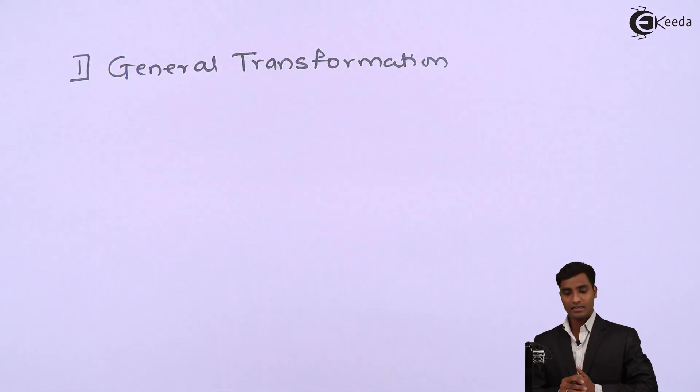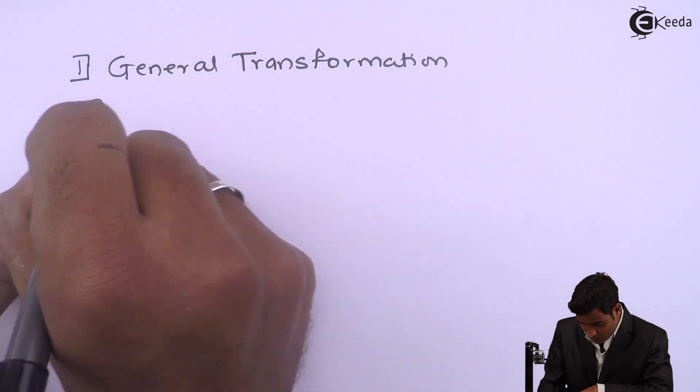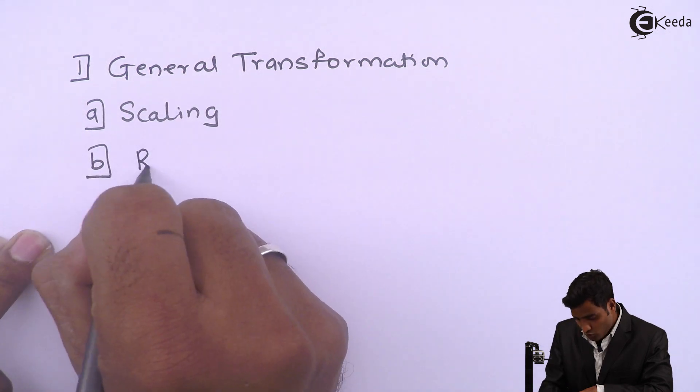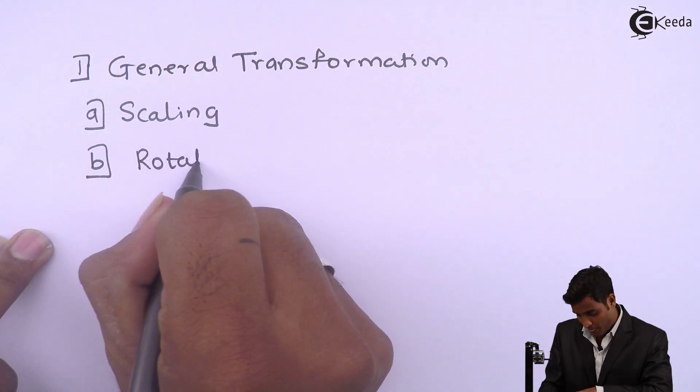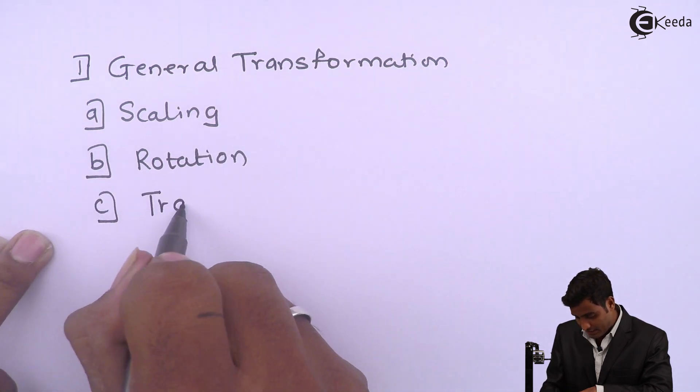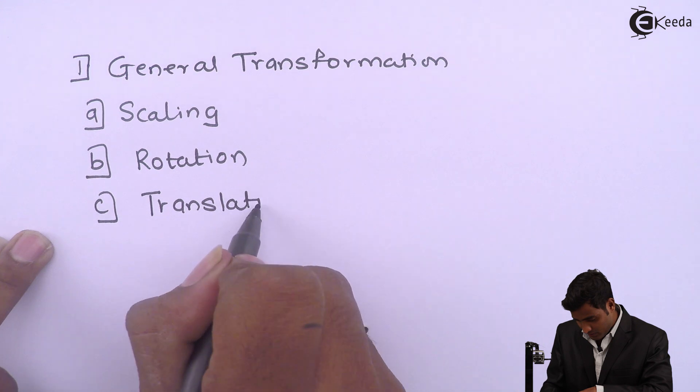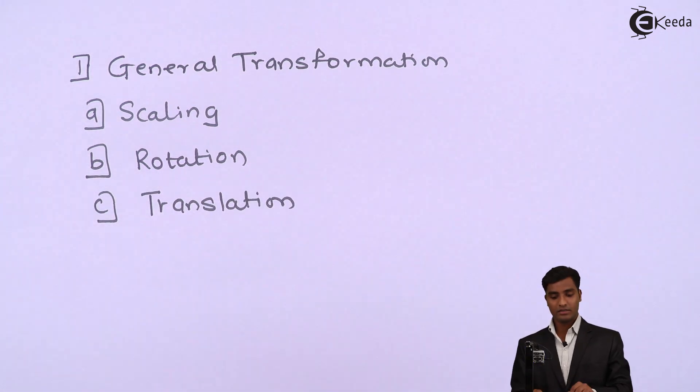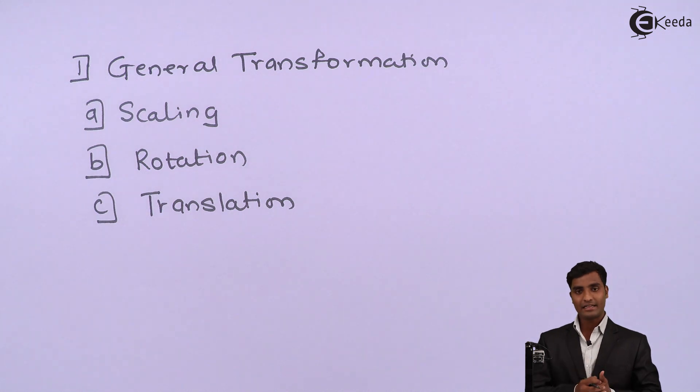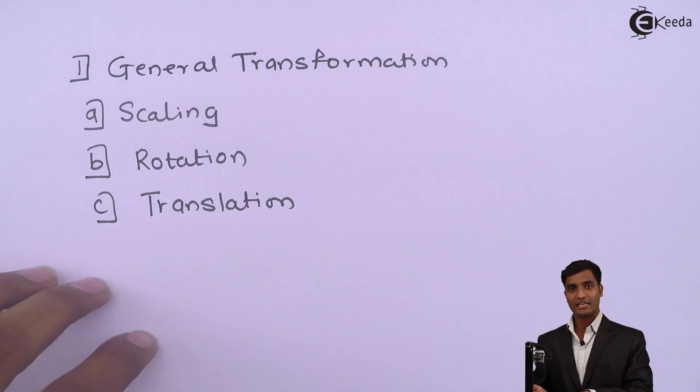Under general transformation there are scaling, rotation, and third and last one is translation. It comes under general transformation. Now we will briefly study what is scaling, what is rotation and what is translation.